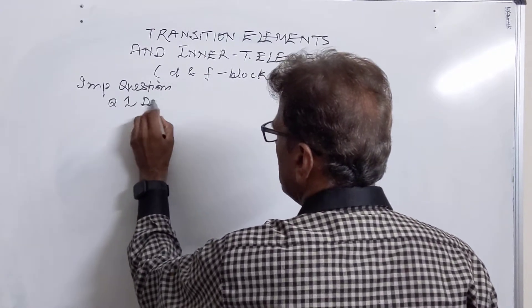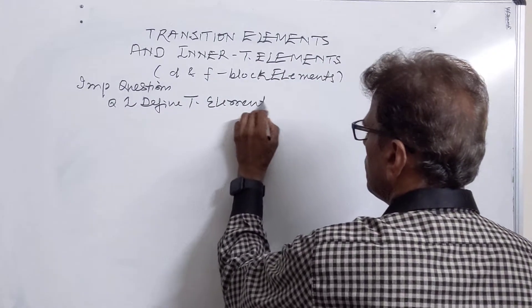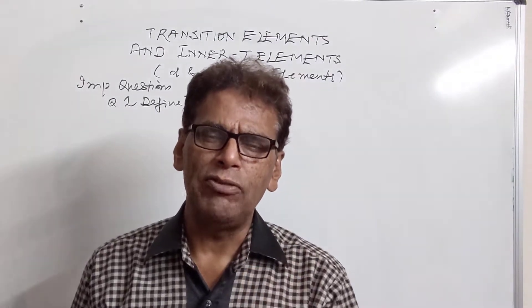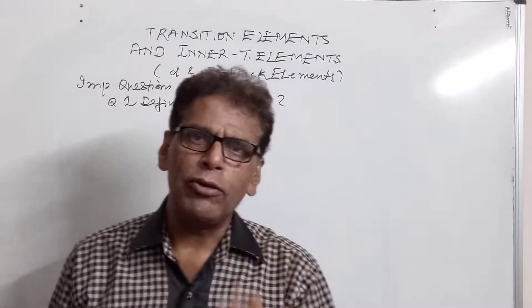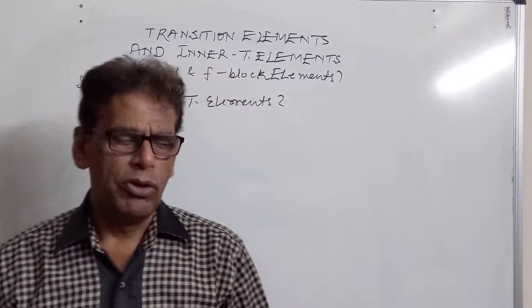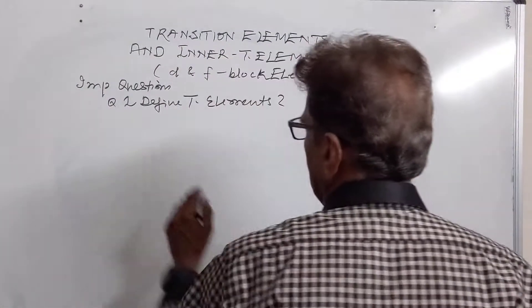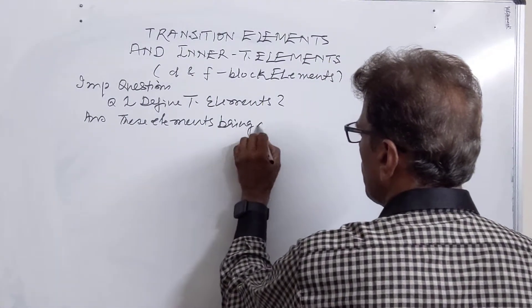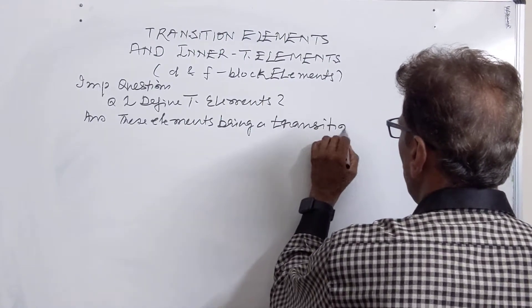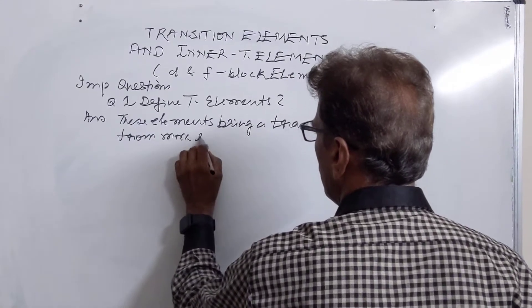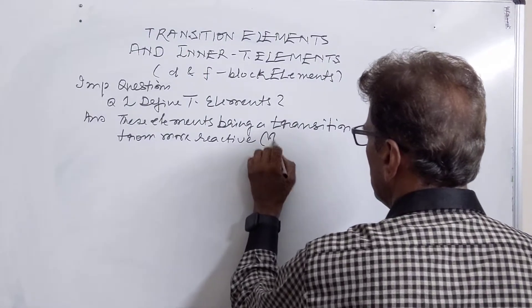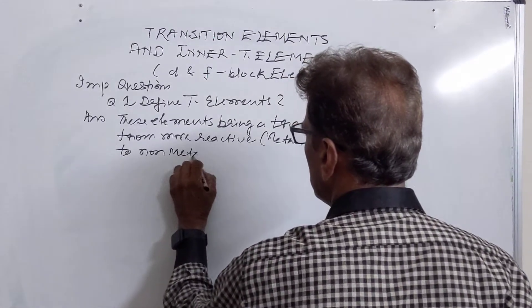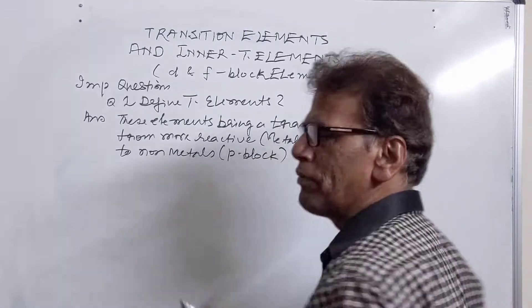First question is: define transition elements. These are the elements of the D block. In these elements, it is the N minus 1 D sub-shell which is progressively filled. These elements are included in group number 3 to group number 12, so these are called transition elements. These elements bring a transition from more reactive metals of S block to non-metals which belong to P block.